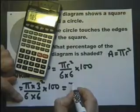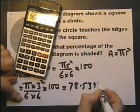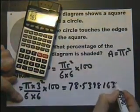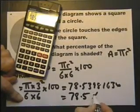Write down everything that's in the window of the calculator. And then write something down that's sensible. I'd say that 78.5 is a sensible answer, a percentage.